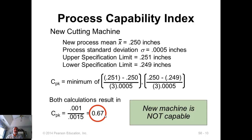Once you reduce the process variance, your C sub pk may sufficiently improve to be more than 1.33, in which case you're good. But even after reducing the variance, if C sub p is more than 1.33 but C sub pk does not meet the threshold of 1.33, then the variance is small enough but you're still not capable due to centering. As a second step, you will then try to center the production process towards the midpoint of the specification, and then C sub pk will be sufficiently large, greater than 1.33.